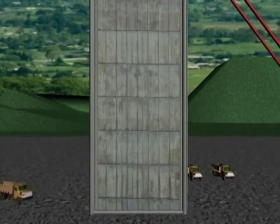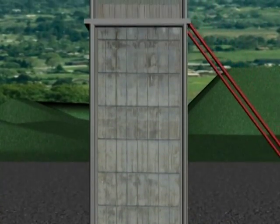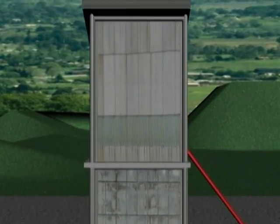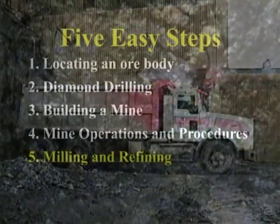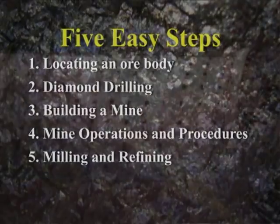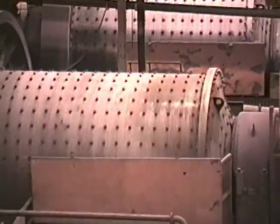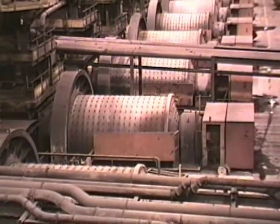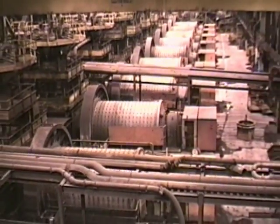At the surface, the ore ends up in storage bins high up in the head frame. From these bins, the ore is loaded into large flatbed trucks or railway cars. Step 5: Milling and Refining. Large banks of rotating drums in the mill break the ore down to dust-sized particles. Flotation cells then separate the valuable minerals from the waste rock.